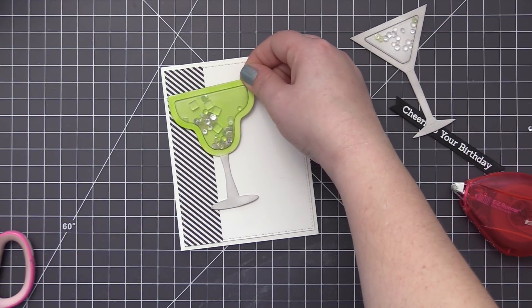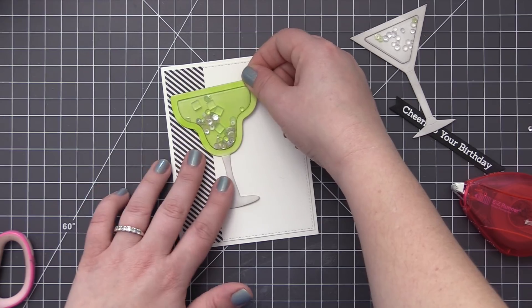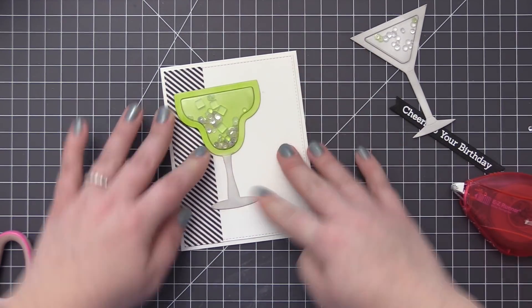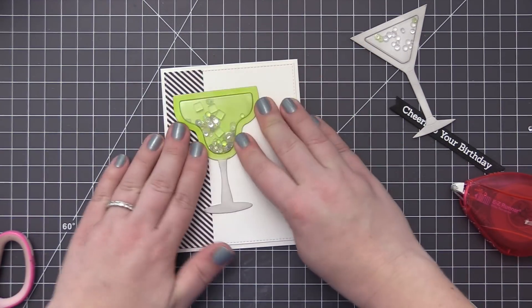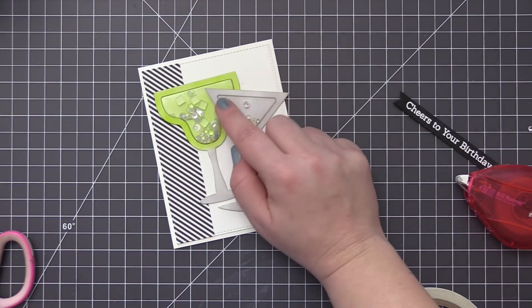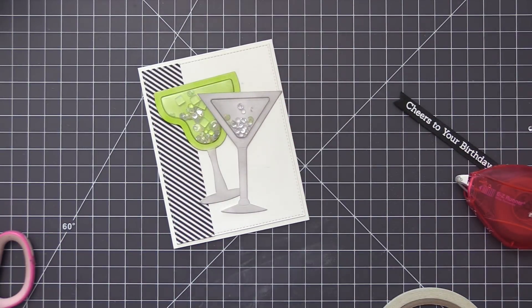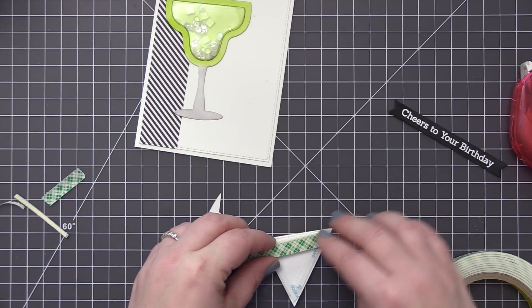Okay so now that we have all of our pieces ready to go we can assemble the card. So I'm first adding the martini glass directly onto the card base. I just added some more adhesive to the back of that and adhered it directly on there.